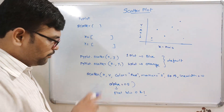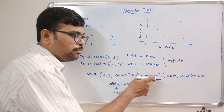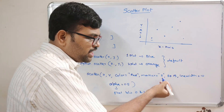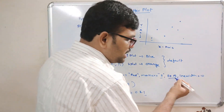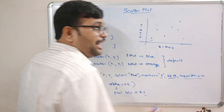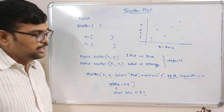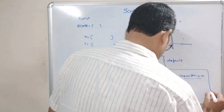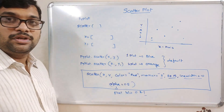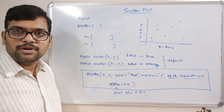So this is the syntax for drawing the scatter plot. We need to give the x-axis and y-axis, then we can represent the color, marker style, size of the marker, line width of the marker, and transparency using alpha. Now we'll see this in the interpreter by executing and drawing the scatter plot.